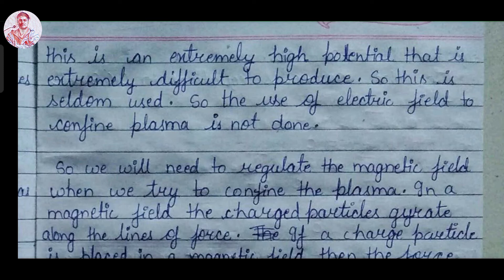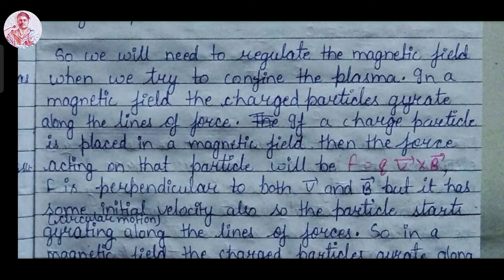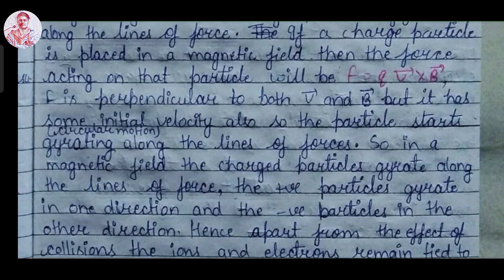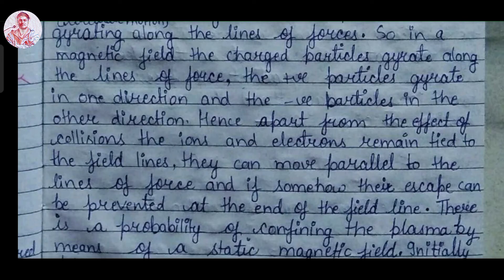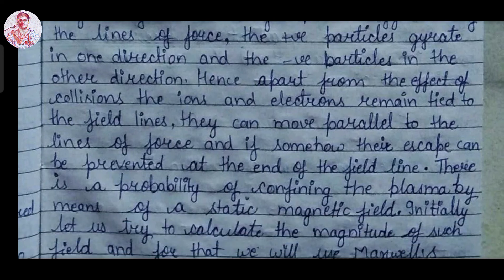Now we will consider using the magnetic field to confine the plasma. In the magnetic field, the charged particles gyrate along the line of force. If a charged particle is placed in a magnetic field, the force acting on it is given by F equals Q into V cross B. Since the force is perpendicular to both V and B, the particle starts gyrating in a circular motion along the line of force. Positive charge particles gyrate in one direction and negative charge particles in the other. Hence, apart from the effect of collisions, the ions and electrons are tied to the field lines, and if their escape can be prevented at the ends of the field lines, there is a probability of confining the plasma by means of static magnetic field.